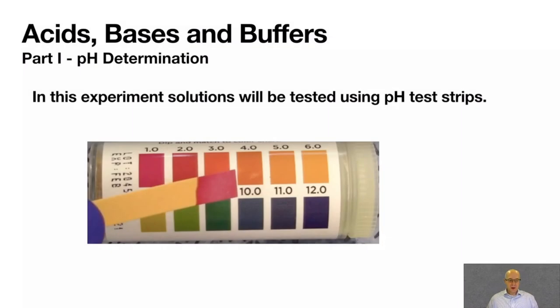Alright, part 1. We're going to be doing the determination of the pH of a solution using strips. The strips look just like this. And the bottle of strips is right here. This is the bottle of strips. And on the side of the bottle is printed all the colors and the pHs.